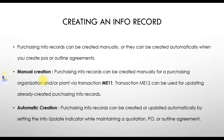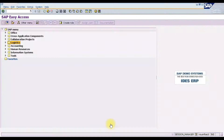There are two methods to create an info record in SAP: manual creation and automatic creation. You can manually create a purchase info record via transaction code ME11, or update and change the info record via transaction code ME12. A purchasing info record can also be created or updated automatically by setting the info record indicator while maintaining a quotation, purchase order, or outline agreement.